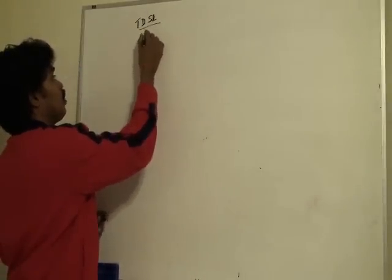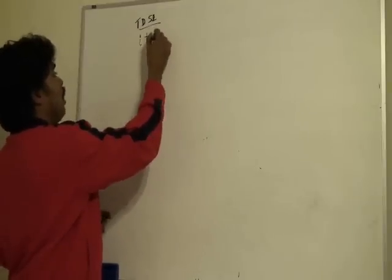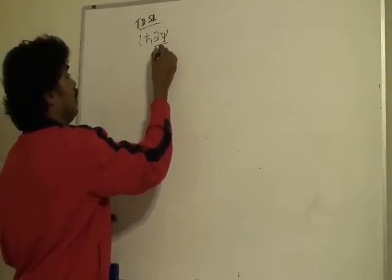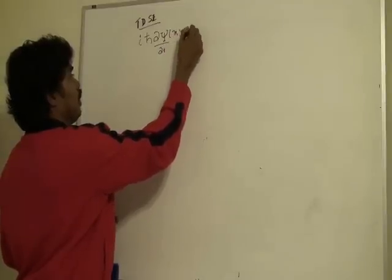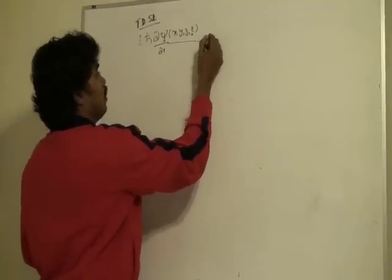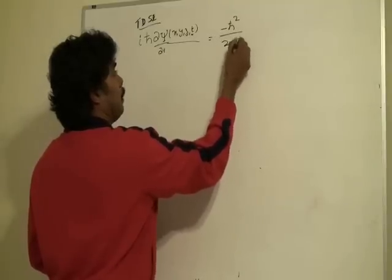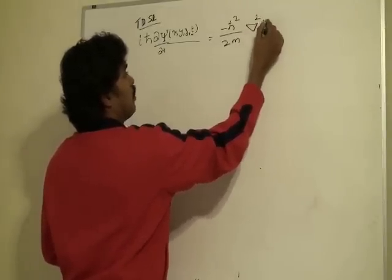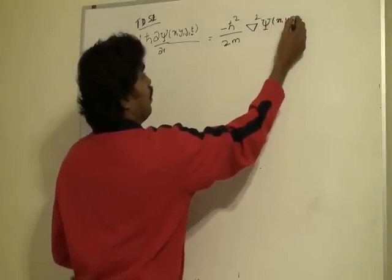So the time-dependent Schrödinger's equation is: i ℏ ∂ψ/∂t, and again this is x, y, z and this is the time factor, is equal to -ℏ²/2m Laplace operator of ψ, again this is x, y, z, t,